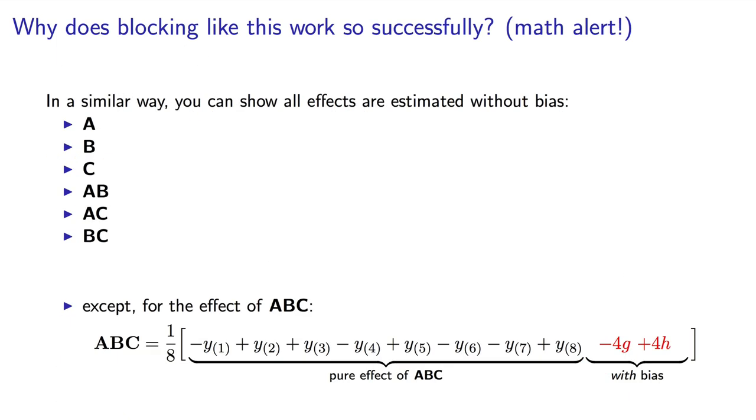In fact, every parameter in the model will be well estimated, without bias, except for the three factor interaction, ABC. That parameter is badly estimated. All the tildes have minuses, all the circles have pluses, so no cancellation occurs there.